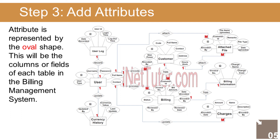The Customer entity has the following attributes: ID (primary key), Code, Full name, Contact, Address, Hours work, Manpower, Encoded by (foreign key). The Billing entity has the following attributes: ID (primary key), Invoice no., Customer ID (foreign key), Bill amount, Encoded date, Encoded by (foreign key).